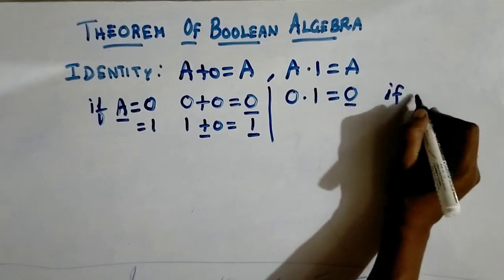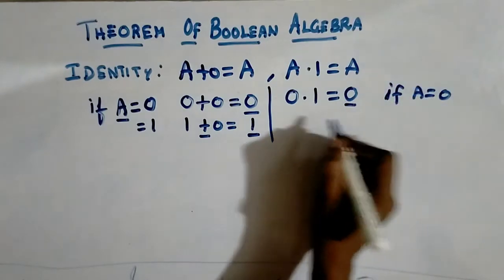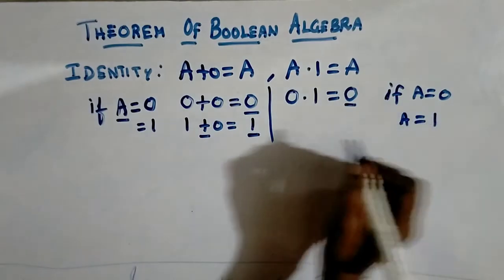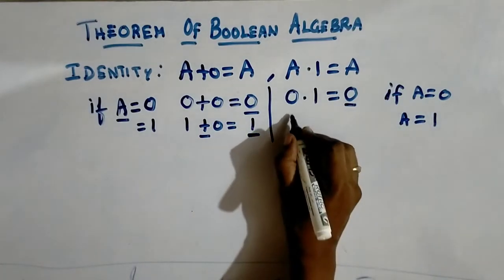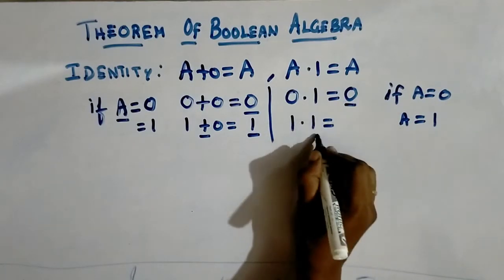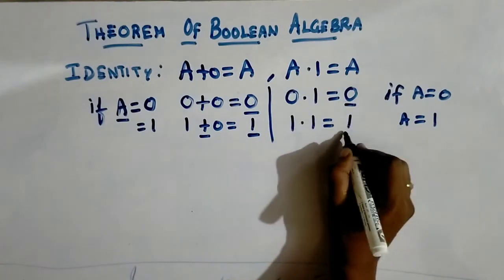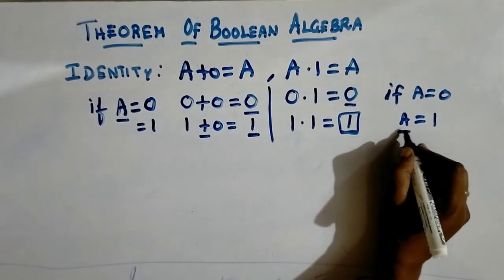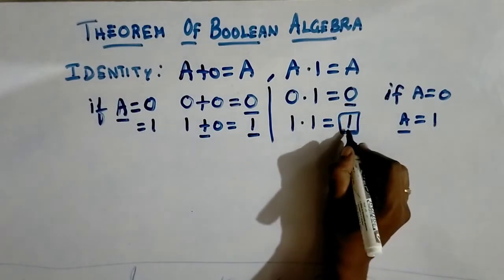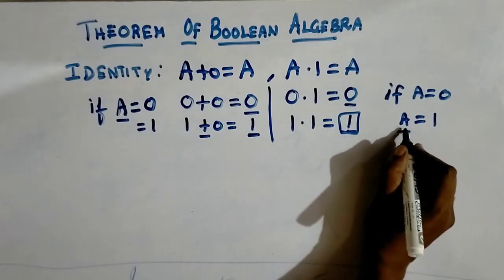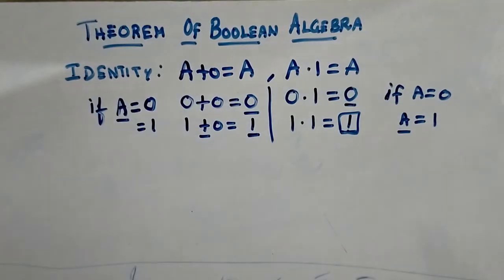If I substitute a value as 1 here, then 1 dot 1 — what is 1 dot 1? It is 1. So this output is nothing but it refers to a. We are just referring this 1 as a. So this is the first theorem of Boolean algebra.